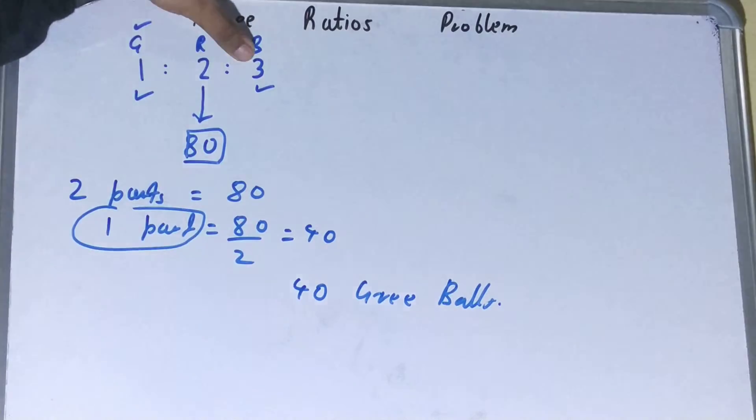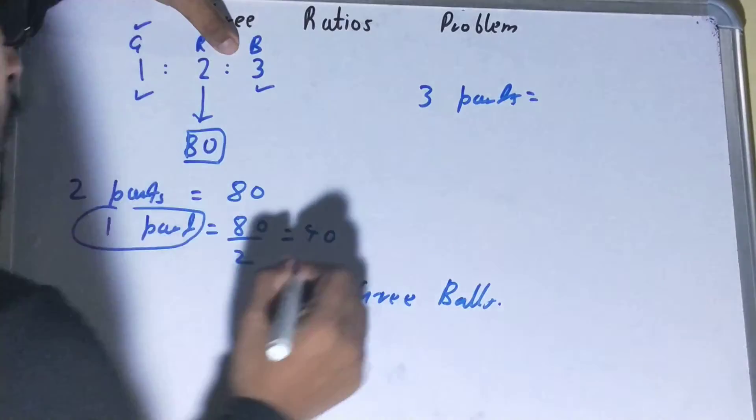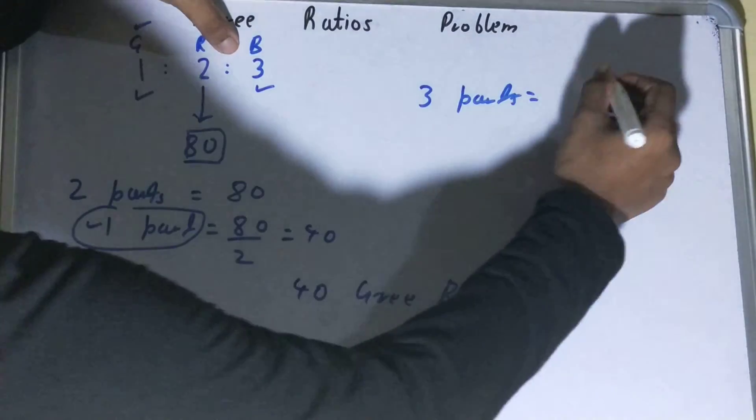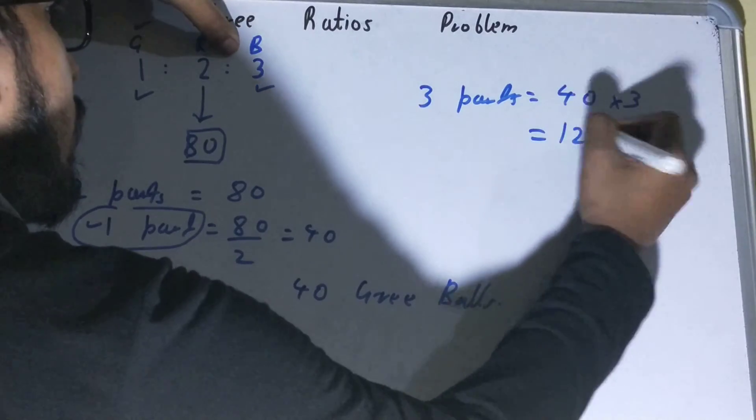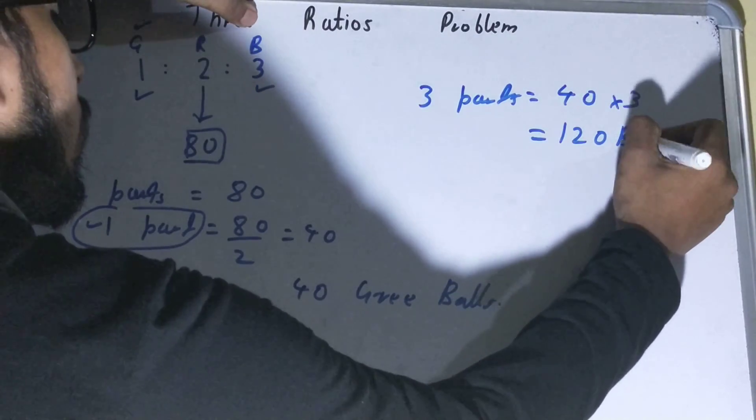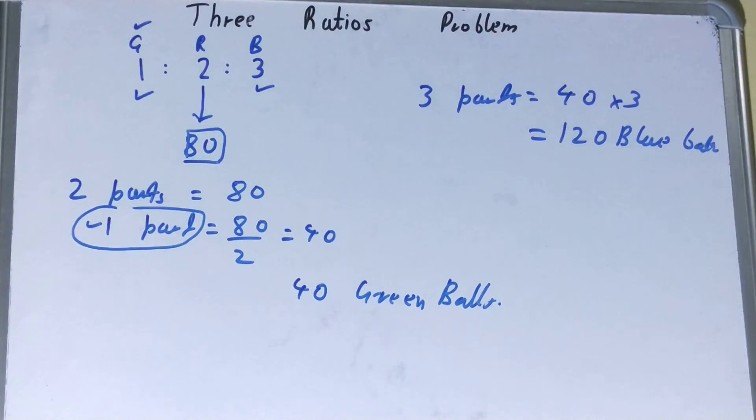And for blue balls, we can see it is three parts in the whole ratio. So three parts will be, we have the value of one part, so for three parts it will be 40 into 3, that will be 120 blue balls. All right.